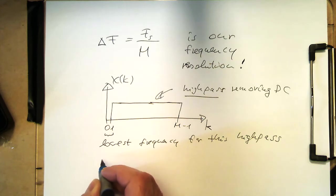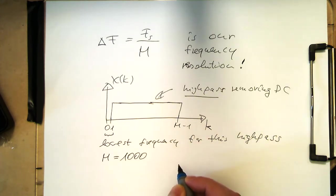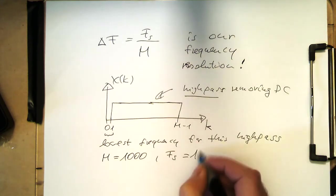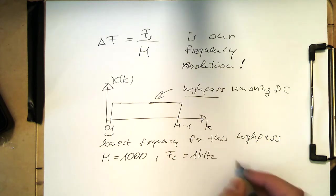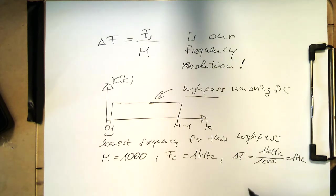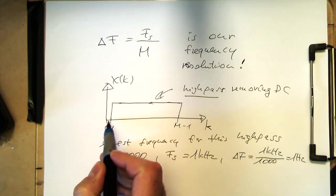So let's do an example to make this easier to understand. So let's say we have a 1000 tab filter. So m is 1000. Sampling rate is 1 kilohertz. And when we just take this formula up there, delta f equals 1 kilohertz divided by 1000. And this gives us 1 hertz. So our resolution is 1 hertz. So the best what this filter could do here is filter out anything below 1 hertz.